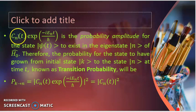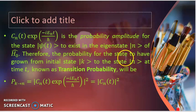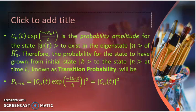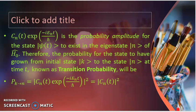We have taken the expression C_n(t) exponential minus E_n t by h-cross from part 1 of the lecture. This is the probability amplitude for the state |ψ(t)⟩ to exist in the eigenstate n of H₀. Therefore, the probability for the state to have grown from initial state k to state n at time t, known as transition probability, is given by P(k→n) equal to the modulus square of this amplitude. The exponential term and its complex conjugate cancel out to give 1.